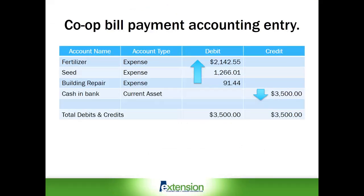Now let's briefly review the accounting entry for this check payment we entered into Excel. The farm expense accounts — and there are three of them — went up with debit entries. This records that farm expenses went up for these three expense accounts. The cash and bank entry records that the farm bank balance went down $3,500. Current assets decrease with credit entries. Notice the two columns: the debit column and the credit column. And like all accounting entries, debit and credit entries must be in balance.